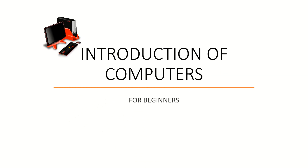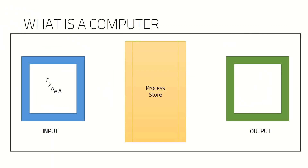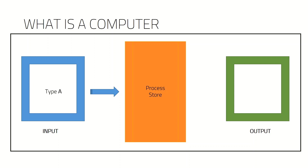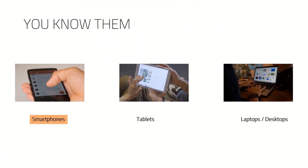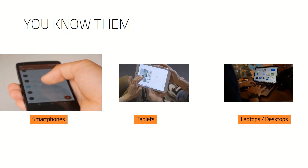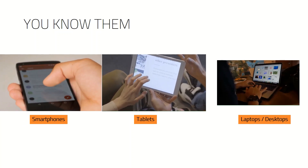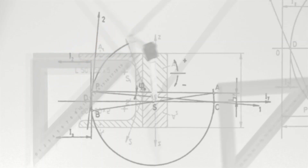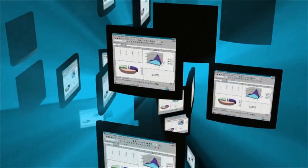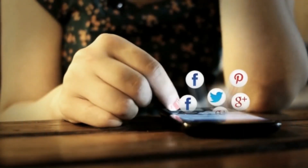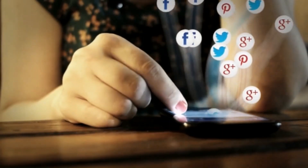Introduction to computers for beginners. By definition, a computer is an electronic device which can process, store, and display information. Smartphones, tablets, laptops, and desktops are all different types of computers. The computer's original function is calculation — it is incredibly fast at mathematical accounting which would take a human hours to complete, but can be done in seconds.